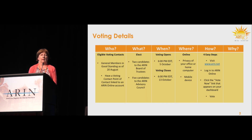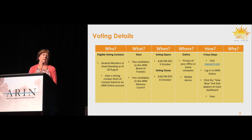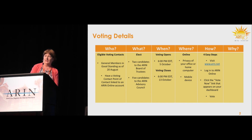I'm going to run through the election process and where we are to date. Eligible voting contacts are general members in good standing. The cutoff for voter eligibility this year was the 20th of August. The Board of Trustees this morning appointed Kevin Bloomberg to serve a three-year term on the NRO Number Council — congratulations to Kevin. That was an appointment. This year in the election, we have two seats on the ARIN Board of Trustees and five seats open on the ARIN Advisory Council.